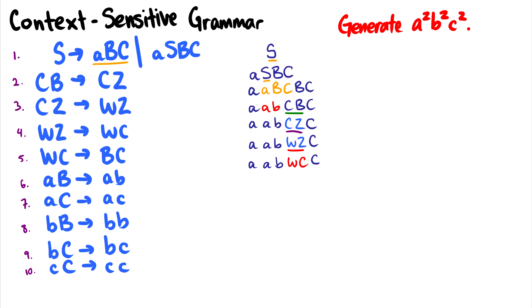If we take a look at rule number five, we have WC going to BC. So we'll have A, A, B, then we will have B, C, and then C remains. So using these context-sensitive rules through a series of substitutions of variables, we're able to switch the Cs and Bs around in order to get the correct order.